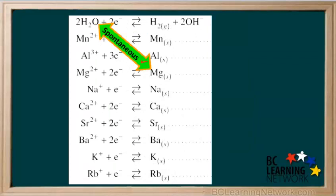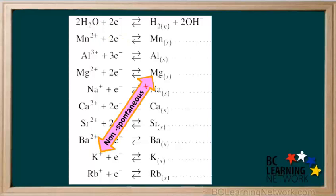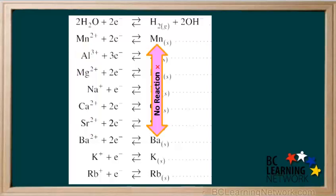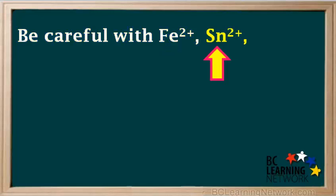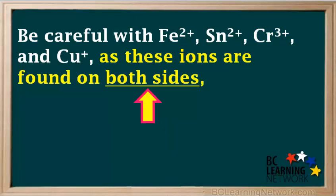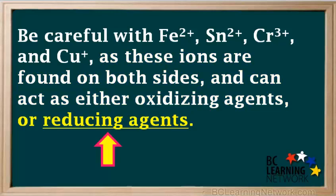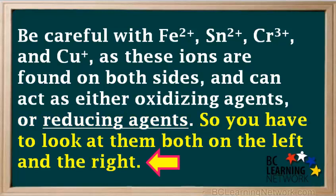To review: if a backslash can be drawn between two species, the reaction between them is spontaneous; but if a forward slash can be drawn, the reaction is non-spontaneous. If two species are only on the same side and are both only oxidizing agents, or both only reducing agents, there is no reaction between them. Be careful with Fe2+ (iron 2), Sn2+ (tin 2), Cr3+ (chromium 3), and Cu+ (copper 1), as these ions are all found on both sides of the table and can act either as oxidizing agents or reducing agents. You must look at them on both sides of the table when determining the spontaneity of reactions involving these species.